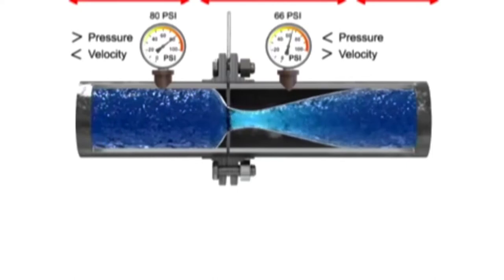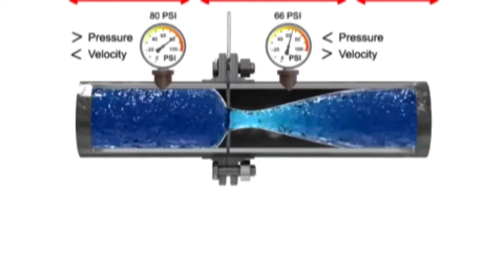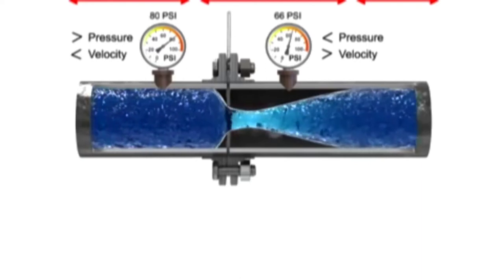The pressure of the fluid at the downstream side of the orifice plate is less than the incoming side due to the accelerated flow.